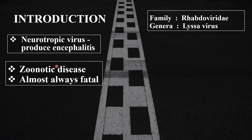Rabies virus is a neurotropic virus and hence it causes rabies encephalitis. It is transmitted mainly by dogs. There are other animals also, but 95% of cases are reported by dogs, and it's almost always fatal. That's why it becomes important to study this topic to understand the preventive measures. It belongs to family Rhabdoviridae. The word 'rhabdos' means bullet or rod shape, which is the shape of this virus — this is also an MCQ question.